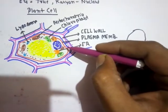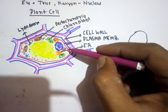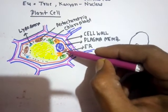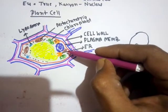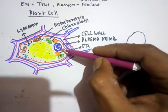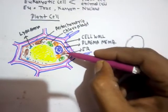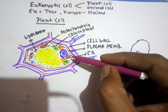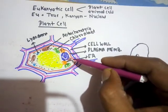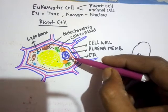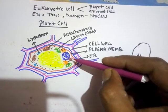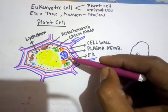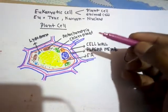Another organelle associated with the nucleus is the Golgi body. In plant cells, Golgi bodies are very small in size and scattered throughout the cytoplasm, which is why they are called dictyosomes. Dictyosome is not a separate organelle — it is a term used for the Golgi body of plant cells, which are smaller in size and scattered in the cytoplasm.